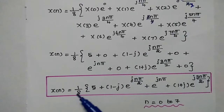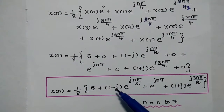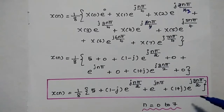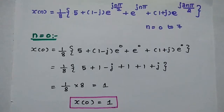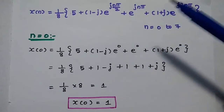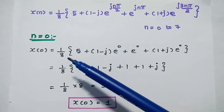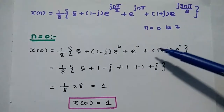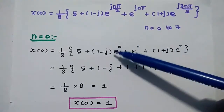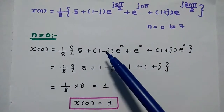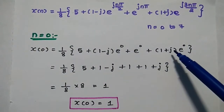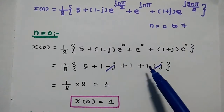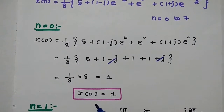The simplified equation is x(n) = (1/8)[5 + (1−j)·e^(jnπ/2) + e^(jnπ) + (1+j)·e^(j3nπ/2)], where n varies from 0 to 7. For n=0: all exponentials equal 1, so x(0) = (1/8)[5 + (1−j) + 1 + (1+j)] = (1/8)(8) = 1.